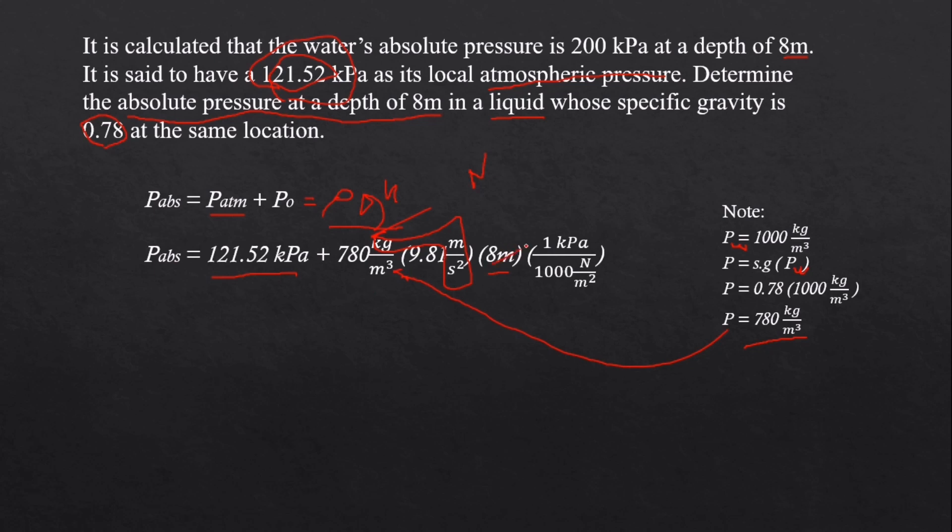Then we need to cancel out the meters and the only one left is meter squared. To convert the Newton into kilopascal or Newton per square meter, we need a unit conversion. 1 kilopascal is equivalent to 1000 Newton per square meter. Cancel those out, and only the kilopascal is left.